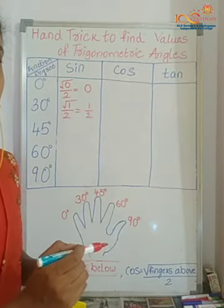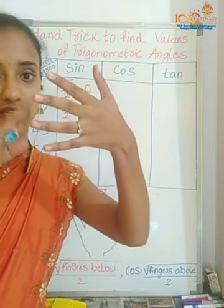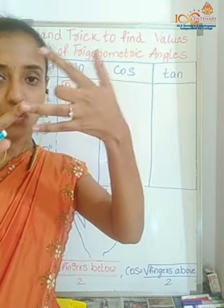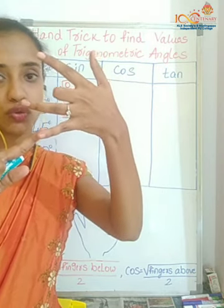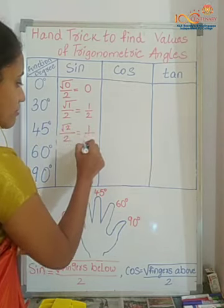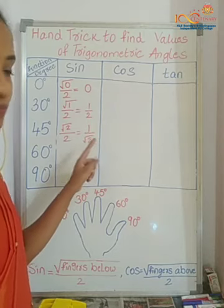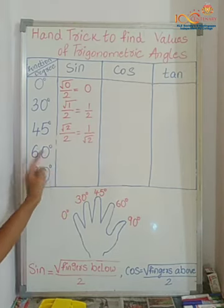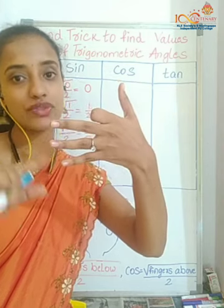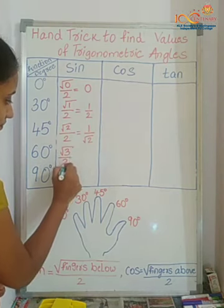Now let's find sine 45. Take out your left hand: 0, 30, 45. For the middle finger showing 45 degrees, how many fingers do I have below? One and two. So it is root of two divided by two, which simplifies to one by root two. Next, sine 60: fold the 60-degree finger. How many fingers do I have below? One, two, three. So it is root three by two.